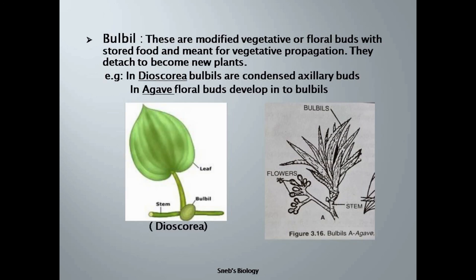Next is bulbil. Bulbil is a special type of multicellular structure that functions as an organ of vegetative reproduction. It is modified from either a vegetative bud or flower bud, and gets swollen because of accumulation of food. After being detached from the parent plant, it falls on the surface of soil and gives rise to a new plant under suitable conditions. For example, Dioscorea bulbifera — here bulbils are axillary structures. In Oxalis, bulbils are found at the apex of tuberous roots. In onion and Agave, bulbils are found on the inflorescence and are modified flowers.